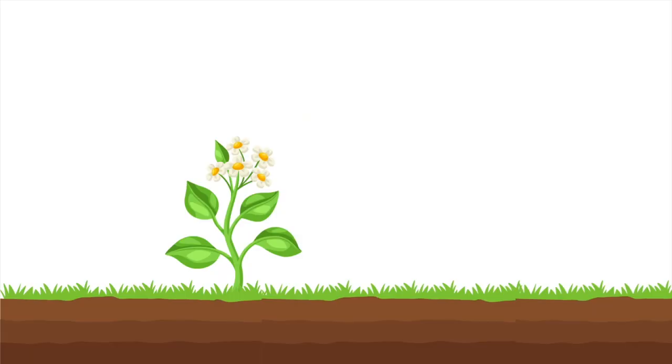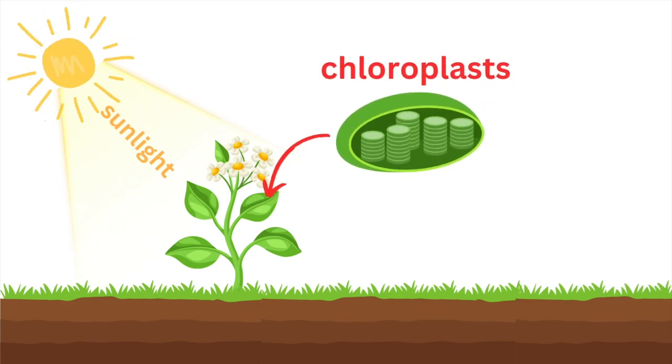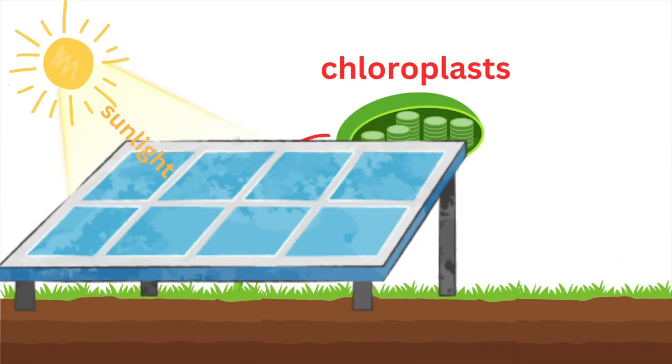First, plants need sunlight. The sunlight gives them energy. Inside the leaves, there are tiny structures called chloroplasts. These chloroplasts capture sunlight, just like solar panels.